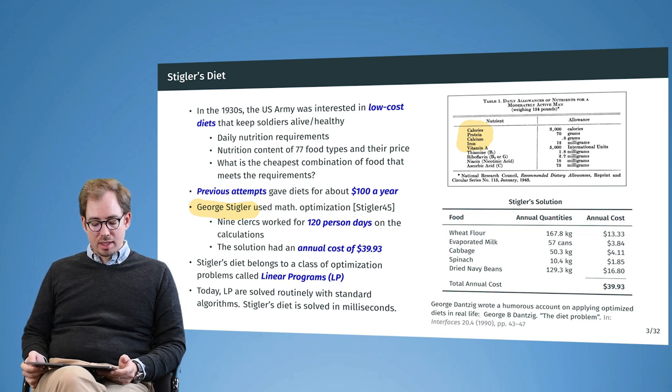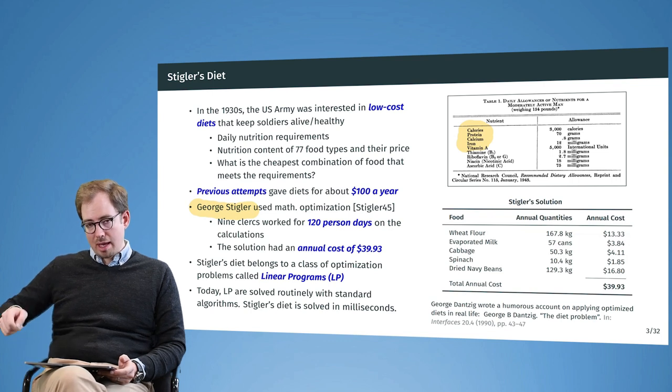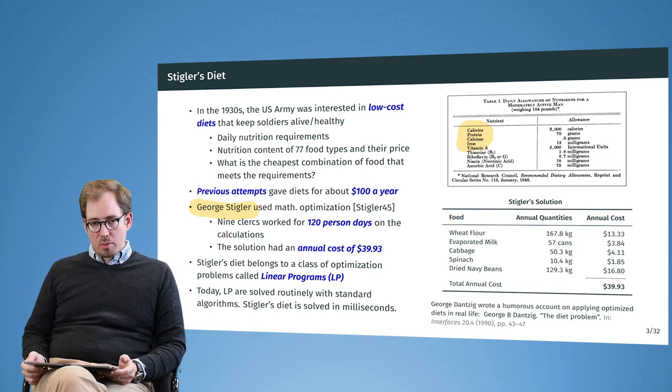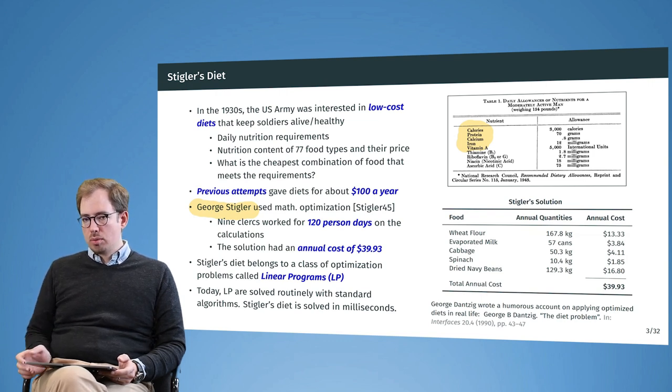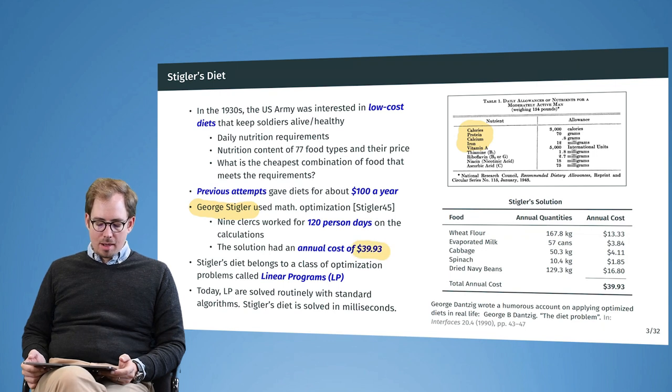George Stigler worked on this together with nine clerks—people who were doing the calculations by hand—and they worked on this for 120 person-days and came up with a solution that is actually pretty close to the global optimum. Today we have improved this a little bit; there were some slight errors, but they came to a cost of about $40 per year.